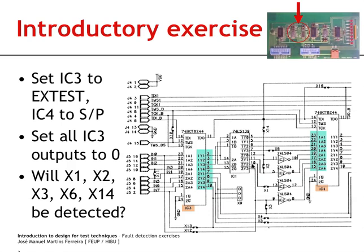In what concerns X1, X1 comes from this node, and this node will be at 1. Since it is at 1, the value driven is no different from what would be captured when the input is floating, so X1 is not detected. In what concerns X2, in this case we are driving opposite logic values, so we are creating the fault detection condition, and X2 may actually be detected.